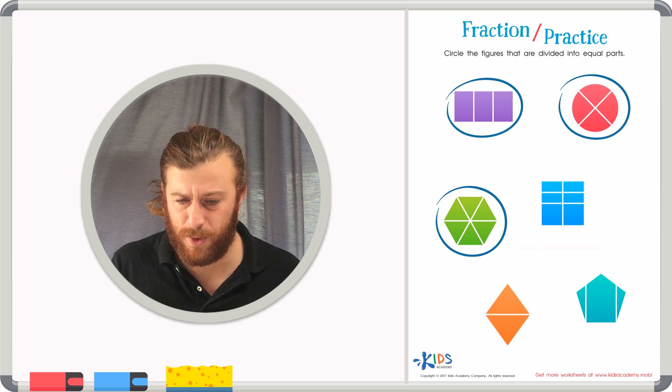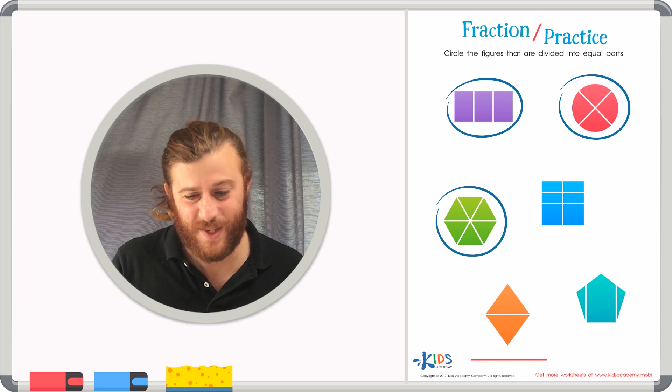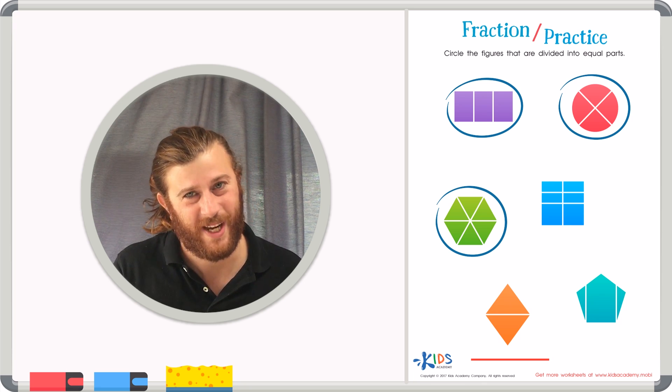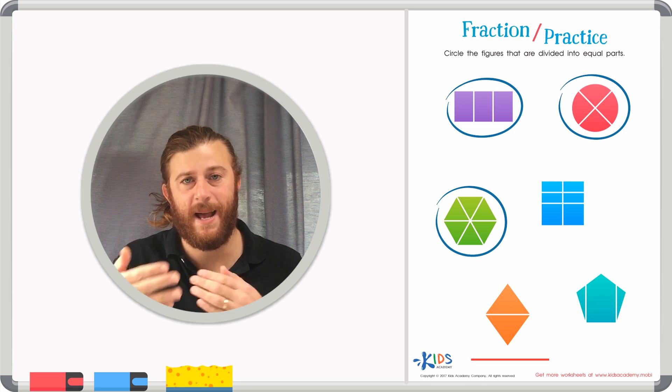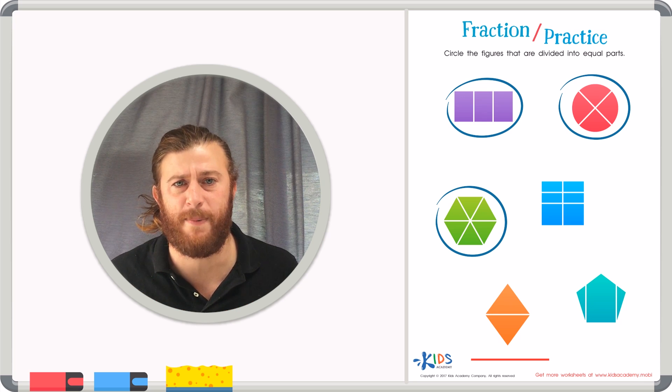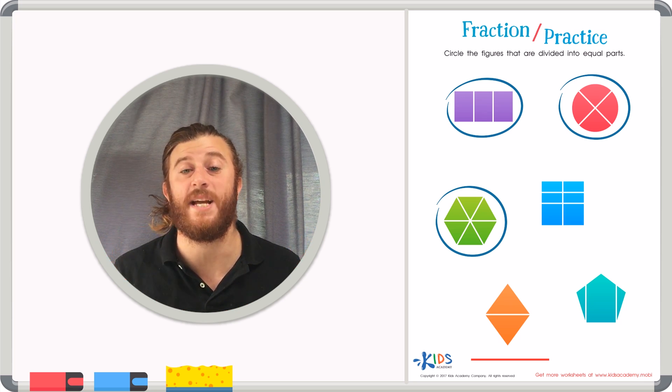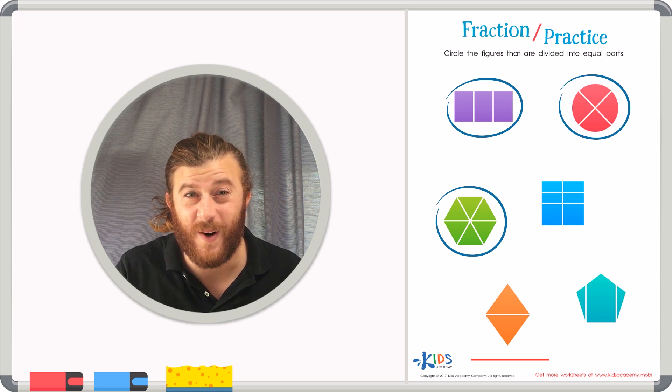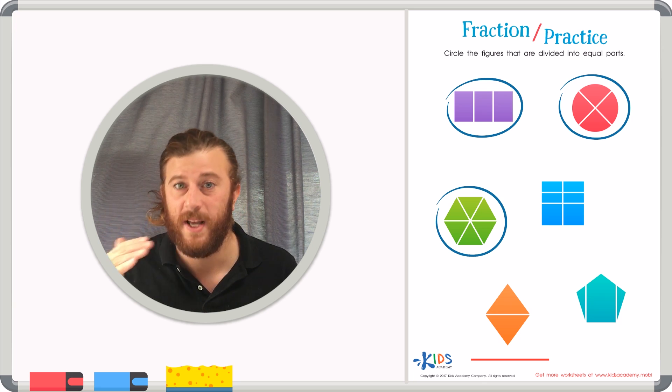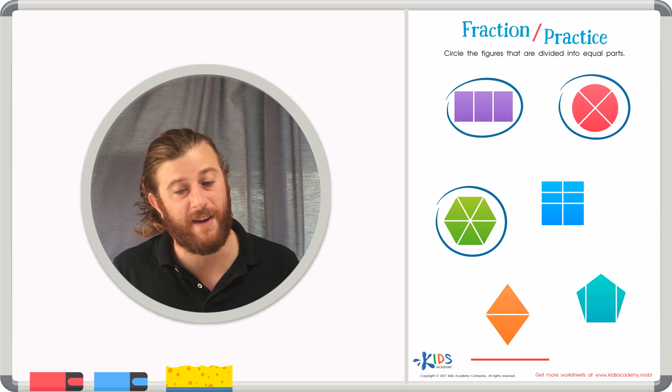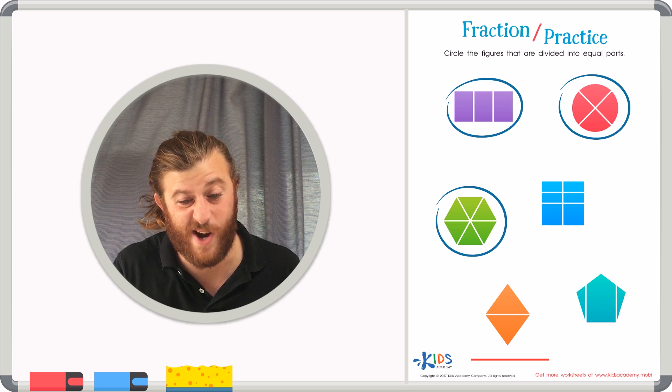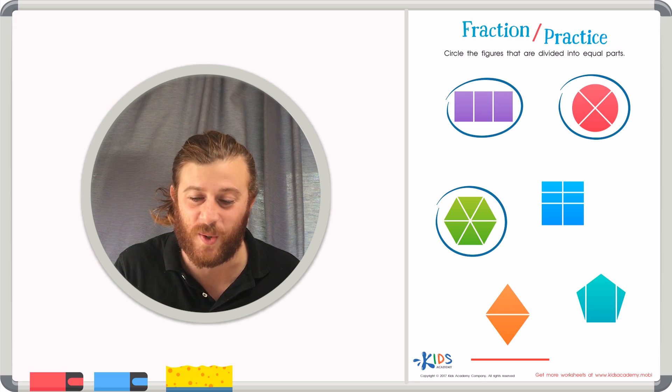Our fifth example shows us a rhombus. And in this rhombus, I see two triangles that look exactly the same. And I bet if I flipped these triangles on top of each other, they would cover each other up to show that they are exactly equal parts. Remember, only your eyes can tell you if these shapes have equal and even parts. And I think this rhombus does. Let's go ahead and circle the rhombus.